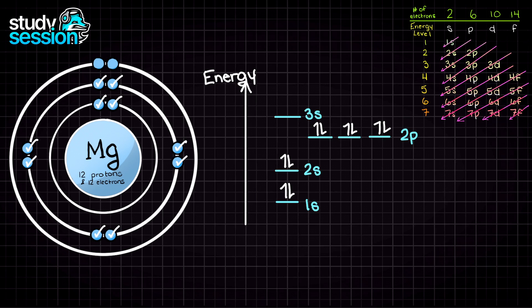As seen on our electron energy diagram, the next subshell to fill will be the 3s subshell. Because the s subshell can again take 2 electrons, we are now finished.